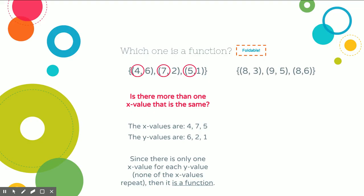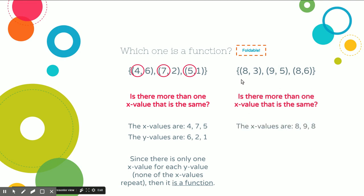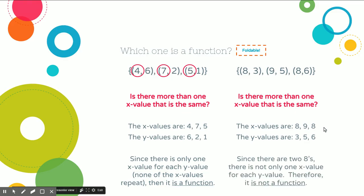Let's look at this next one. We've got x values of 8, 9, and 8, with y values of 3, 5, and 6. Look at those x values — there are two 8's that have repeated. That tells us it is not a function. This one had all unique x values, while this one had repeating x values, which makes it not a function.